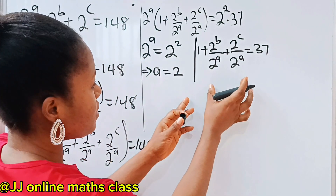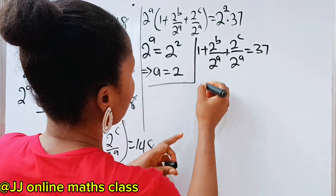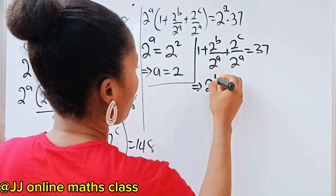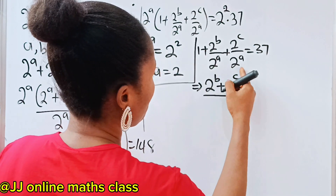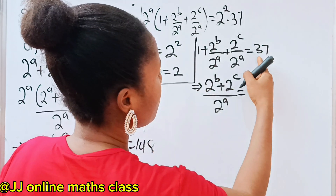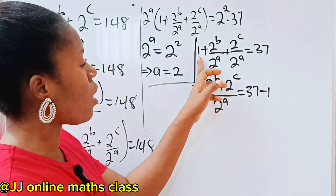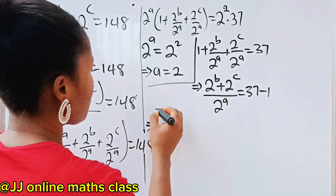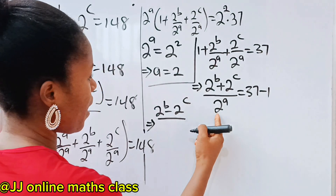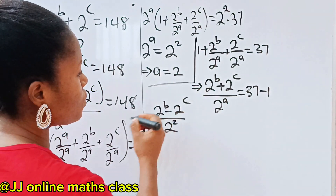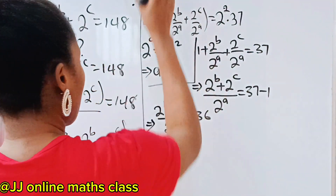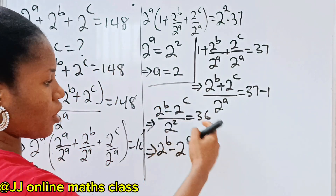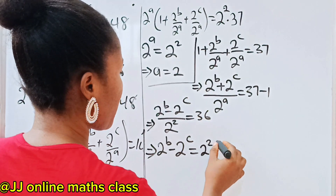Let's go ahead and solve this. We transfer the 1 to the other side of the equation, so we have 2 to the power of B plus 2 to the power of C divided by 2 to the power of A is equal to 37 minus 1, which is 36. This implies that 2 to the power of B plus 2 to the power of C divided by 2 to the power of 2 is equal to 36. Cross-multiplying, 2 to the power of B plus 2 to the power of C is equal to 2 to the power of 2 multiplied by 36.